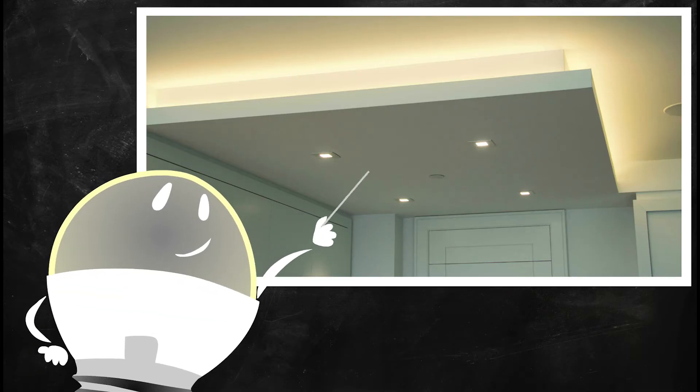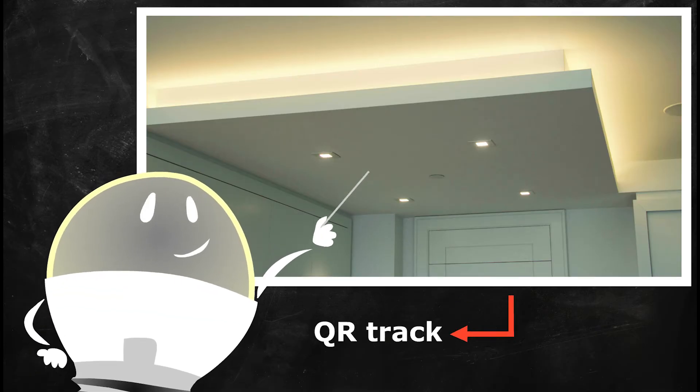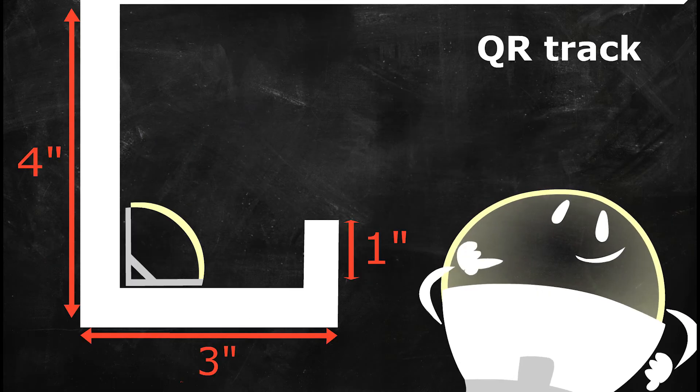If the desired effect is to create a wash of light, you will be using our QR track. This fixture is attached to the wall for optimal light dispersion.